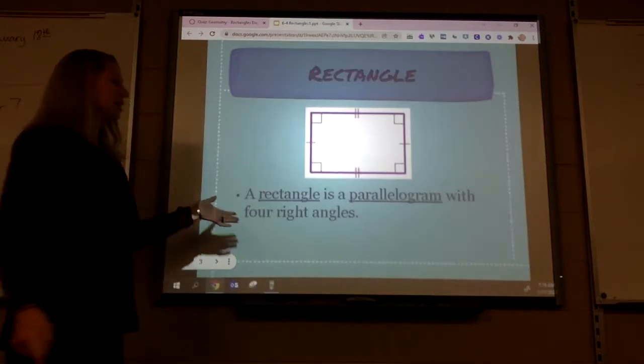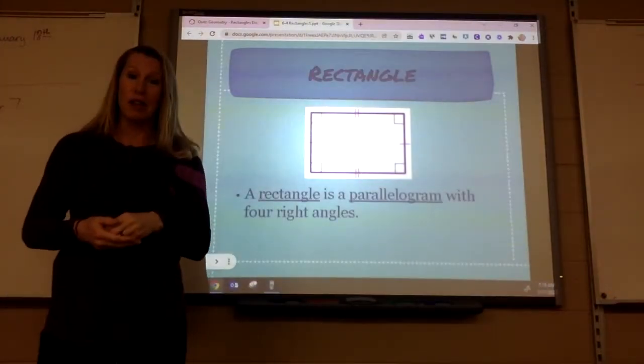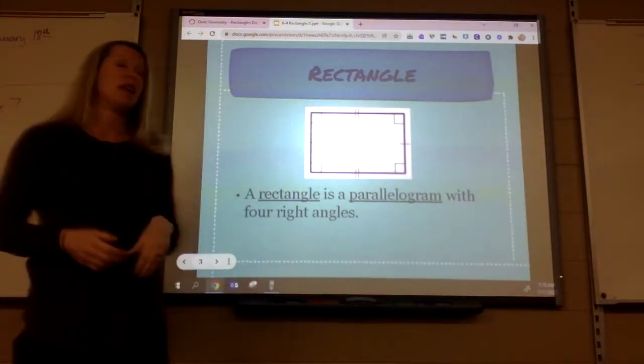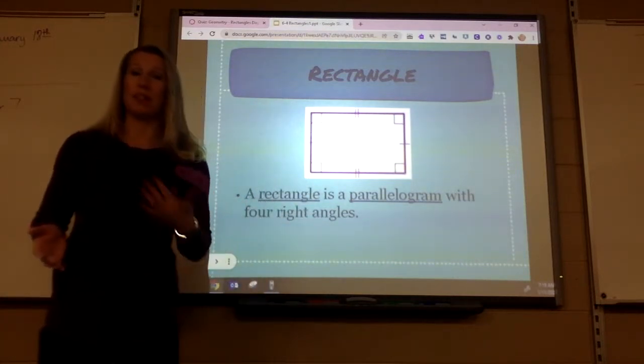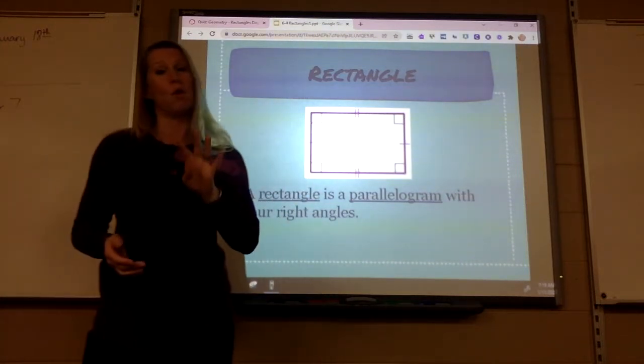The definition of a rectangle is it's a parallelogram with four right angles. So as long as it's a parallelogram, it has all the properties of a parallelogram, but it has to have four right angles.